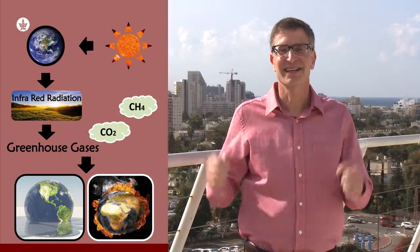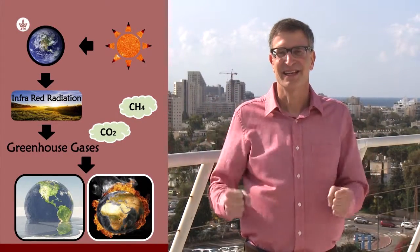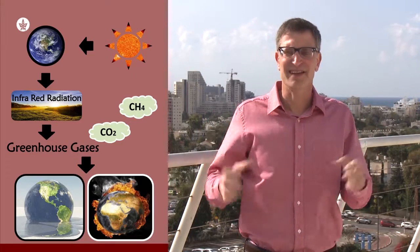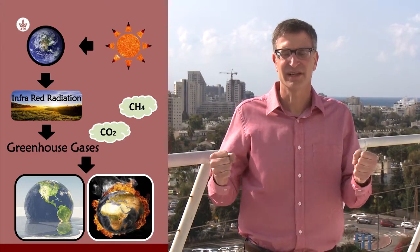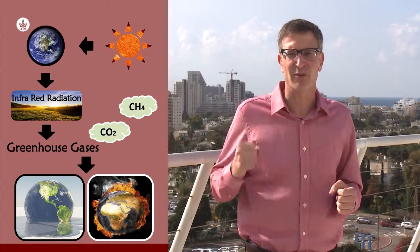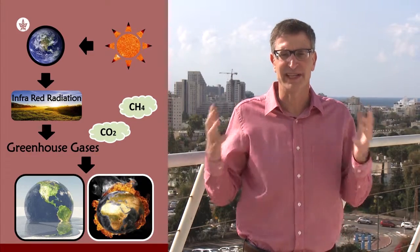The Earth gets energy from the Sun in the form of sunlight. Earth's surface heats up as it absorbs this energy. Earth cools down by giving off a different form of energy called infrared radiation.